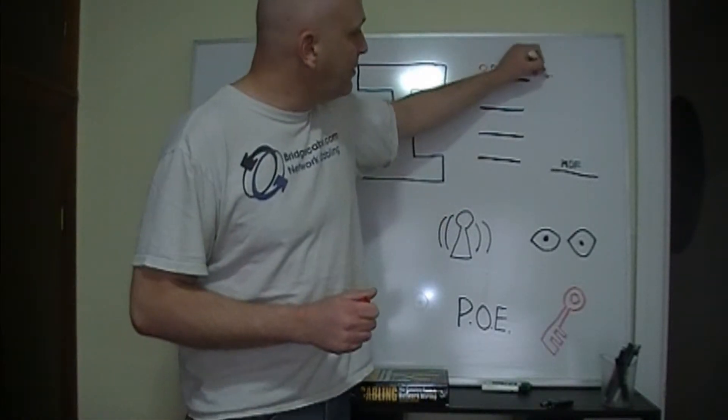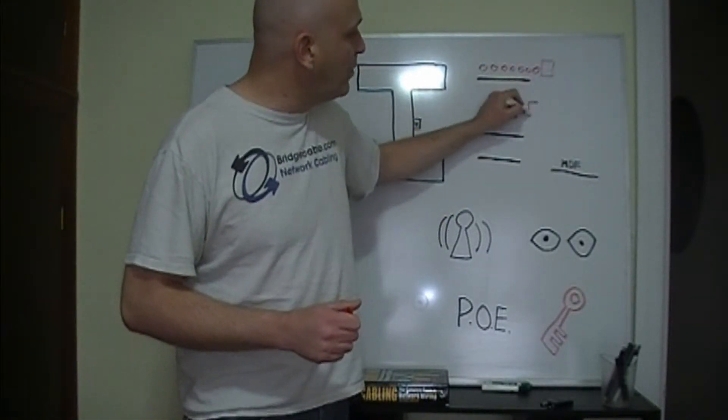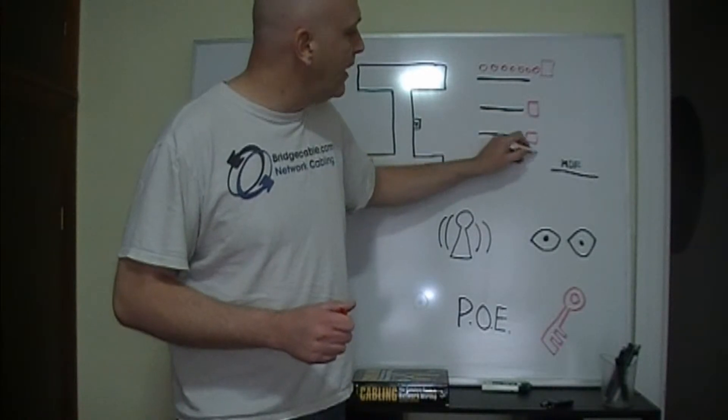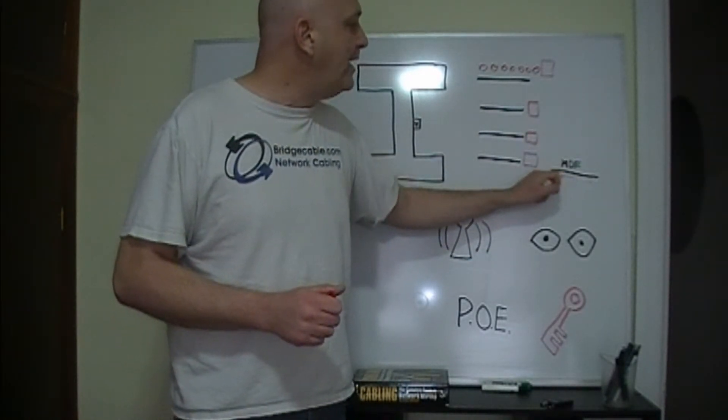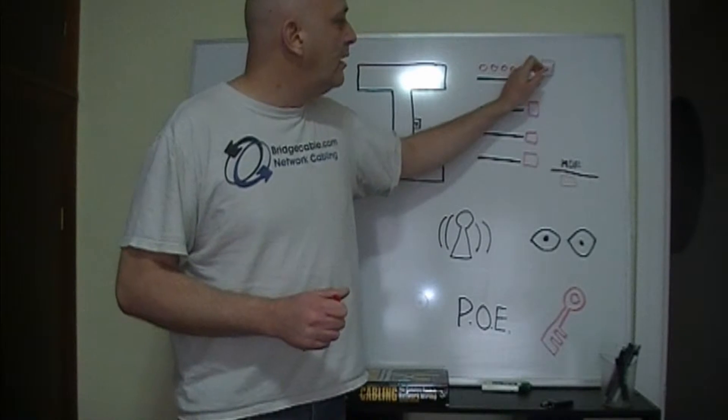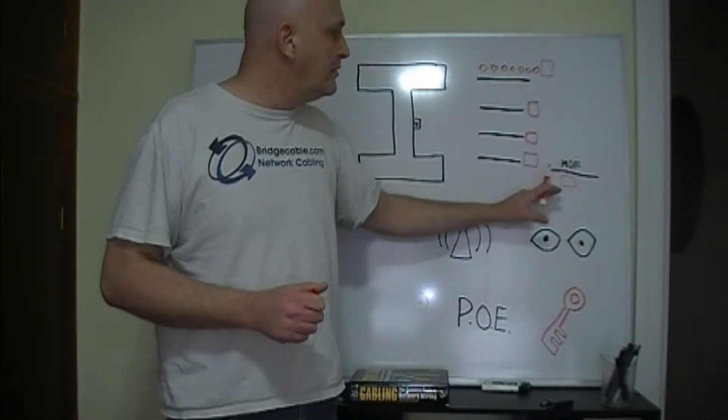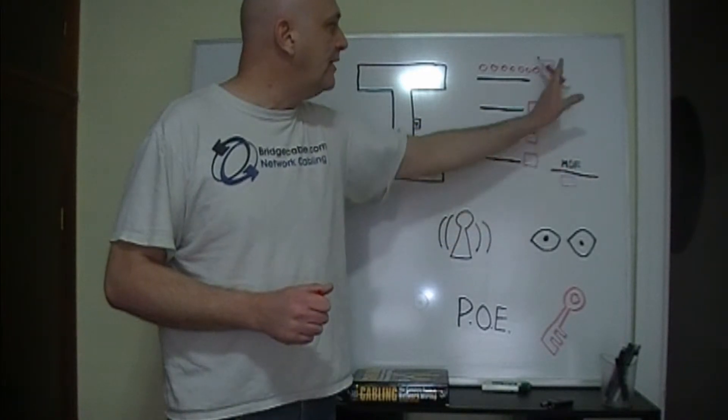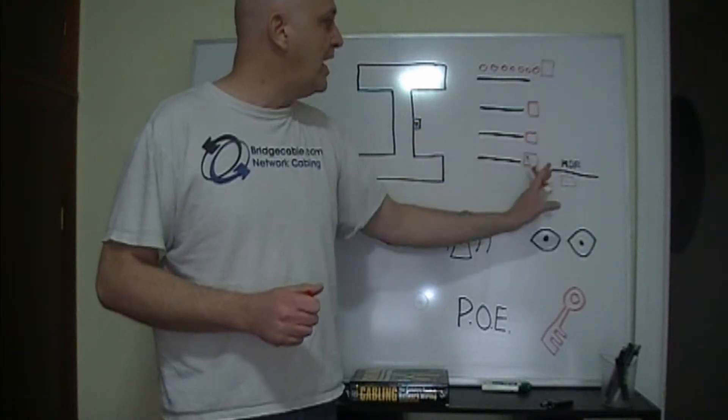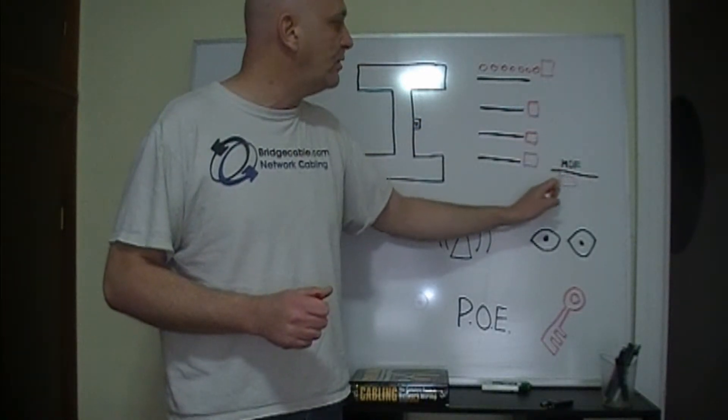What we did in this solution was, on each floor and on different wings, we had a home run from each floor going down to the server room. So, you've got the security, you've got the strength of a clear shot, a home run to each floor to the server room.